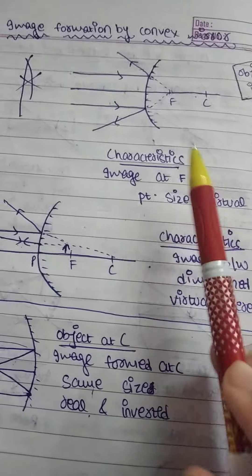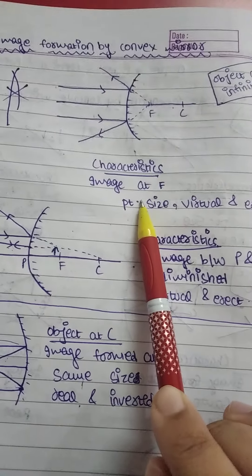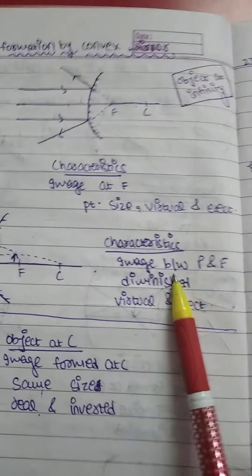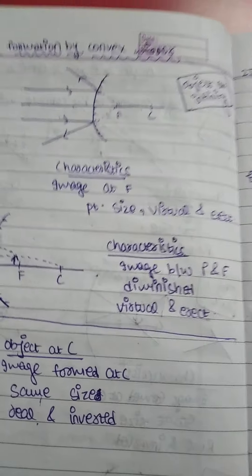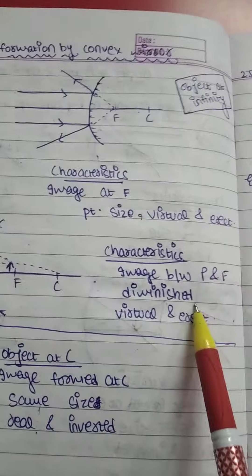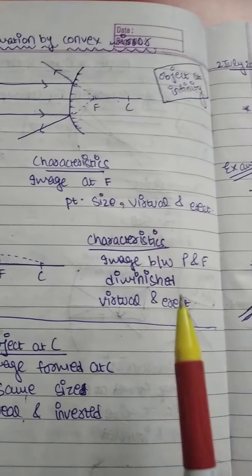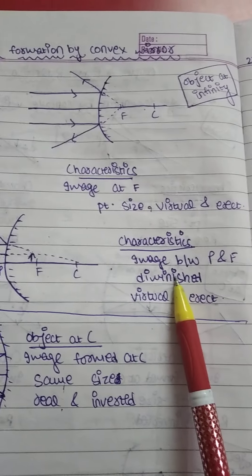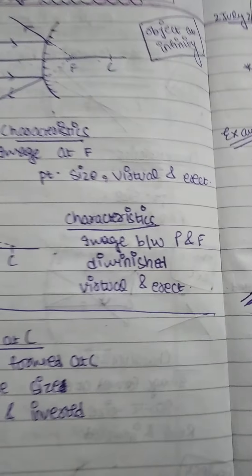In the first case (object at infinity) the image was point-sized, but now it will be a little bigger — still diminished. In both cases the image will be virtual and erect.